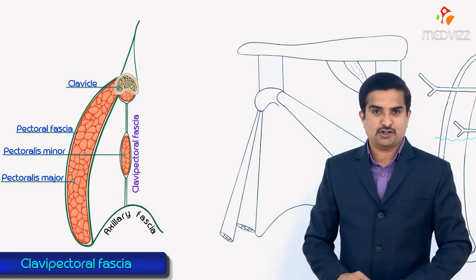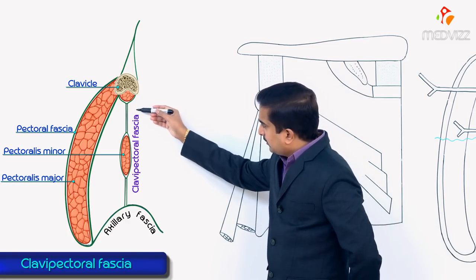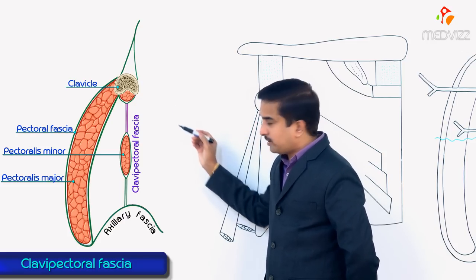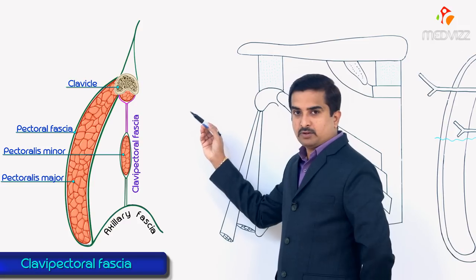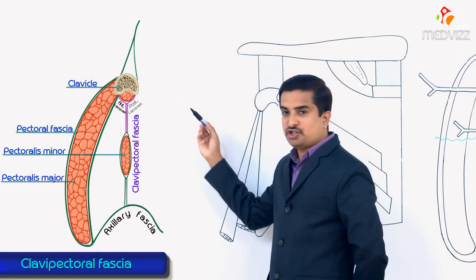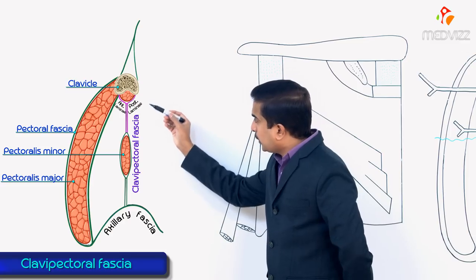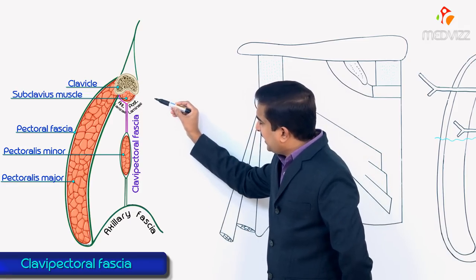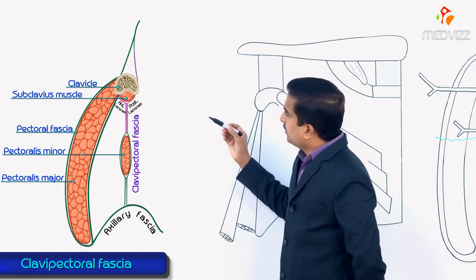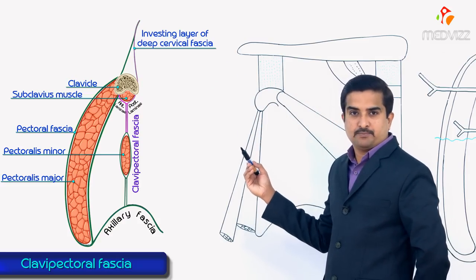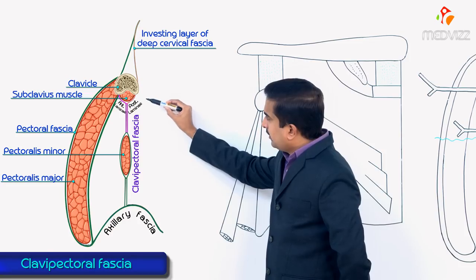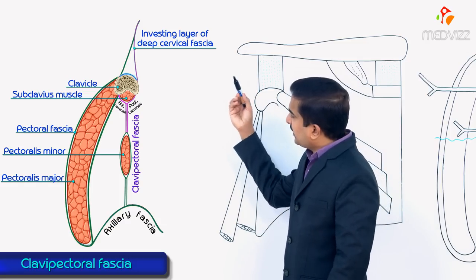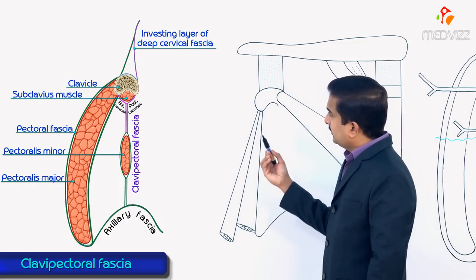In its upper part, the clavipectoral fascia splits into two laminae: an anterior lamina and a posterior lamina. These enclose the subclavius muscle. The posterior lamina is the one which continues with the investing layer of the deep cervical fascia.